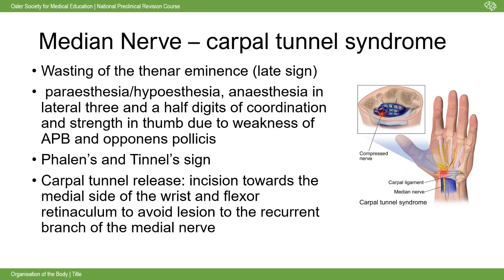Carpal tunnel syndrome results from compression of the median nerve within the carpal tunnel, created by the carpal ligament. Anything that swells or injures this ligament can compress the nerve. Classically, patients wake at night with a numb or painful hand and shake their arm out of bed to relieve it. Clinically tested with Phalen's test - sustained wrist flexion for a minute to elicit symptoms - and Tinel's sign - tapping over the median nerve to evoke paraesthesia.